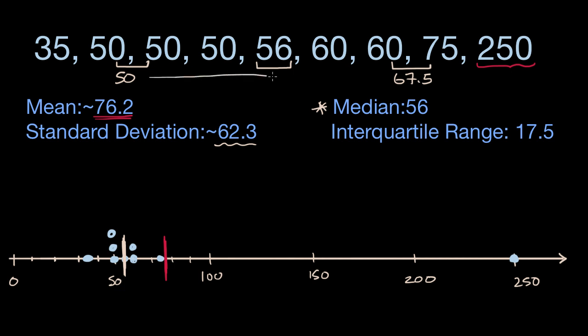Notice this distance between these two, this 17.5, this isn't going to change even if this is $250 billion. So once again, both of these measures are more robust when you have a skewed data set.